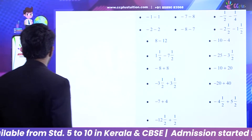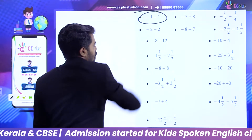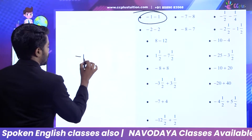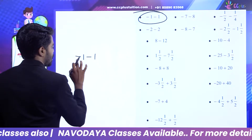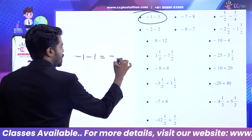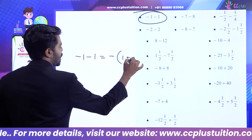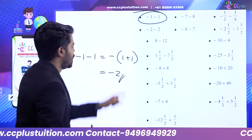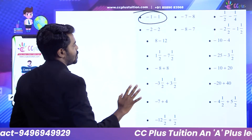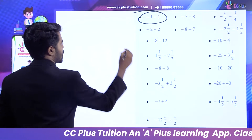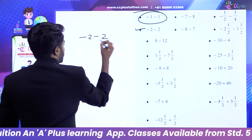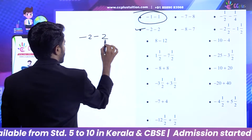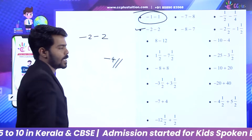This problem is minus 1 minus 2. Minus 1 minus 1 — that is negative, that is minus 2. So minus 1 minus 1 is equal to minus 2. Moving on: minus 2 minus 2. What is minus 2 minus 2? That is minus 4.